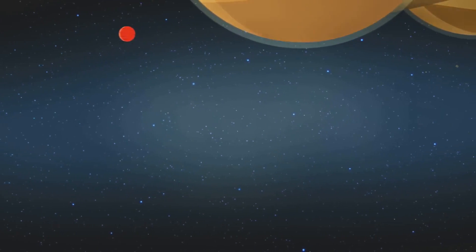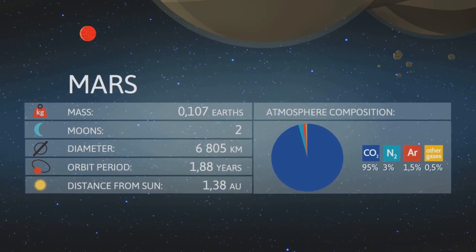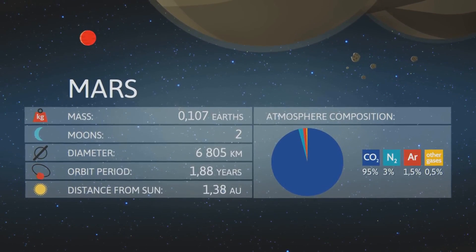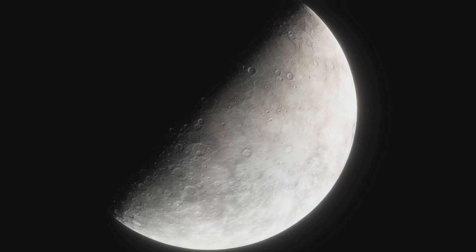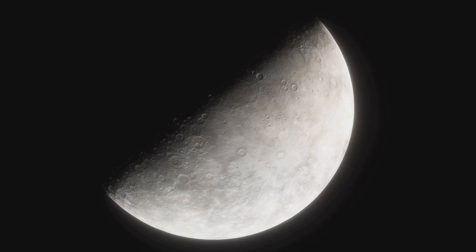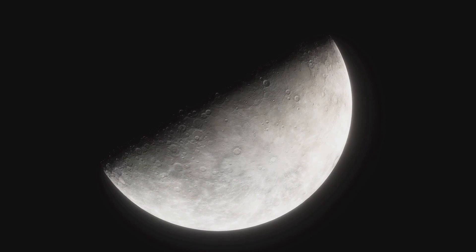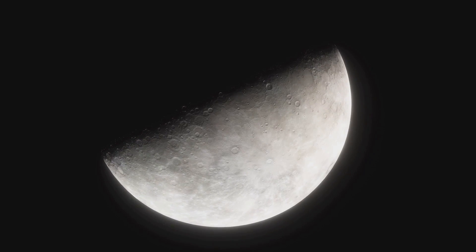Now, you might be wondering, how much has Mercury shrunk? Well, scientists estimate that over the past 4 billion years, the planet's diameter has reduced by approximately 14 kilometers. That might not sound like a lot, but for a planet that's only about 4,800 kilometers in diameter to begin with, it's quite significant.